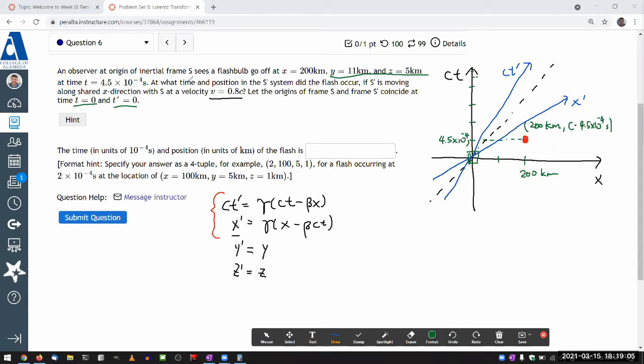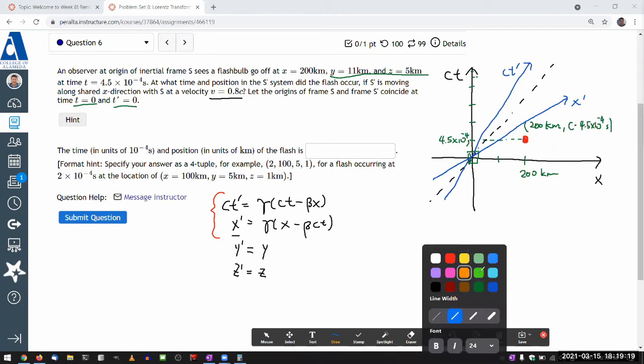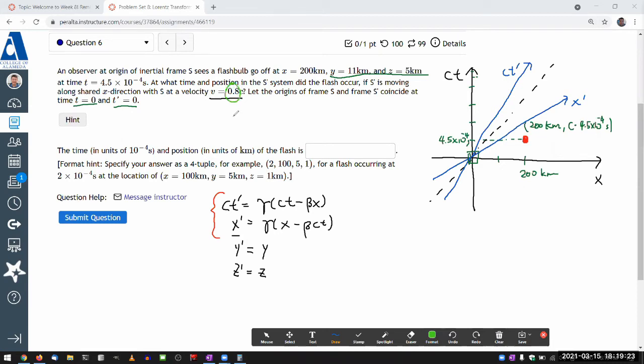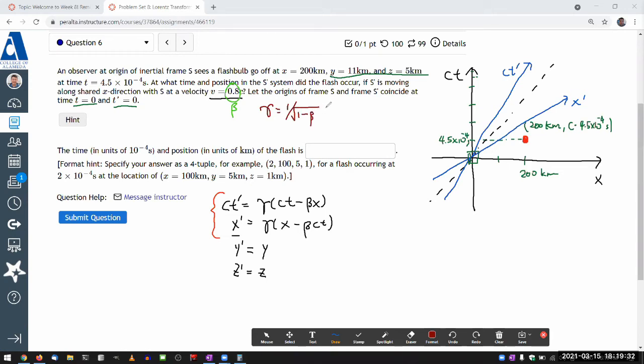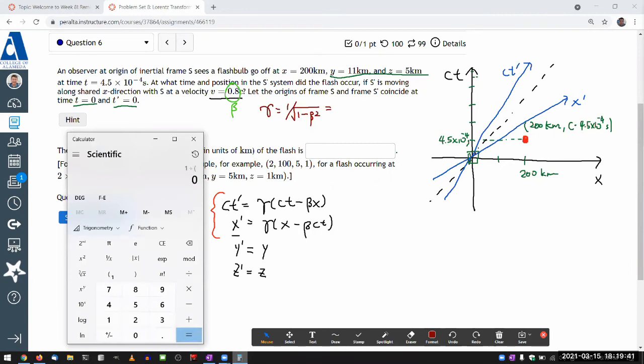So the question asks, at what time and position in the S prime frame did the flux occur? So I need to figure this out. So I'm given beta. I think it's going to be convenient to write out what gamma is going to be. So this is 0.8. This is already my beta. So let me write out gamma. My gamma is equal to one over square root of one minus beta squared. Or, yeah, let me just do it in a calculator. It's going to be one divided by parenthesis, one minus 0.8 squared. Take the square root of these. Equals. So my gamma is, I think there's a rational fraction, but I'll just write it down as decimal. 1.667. That should be enough precision.